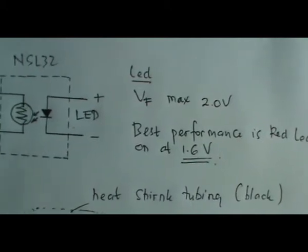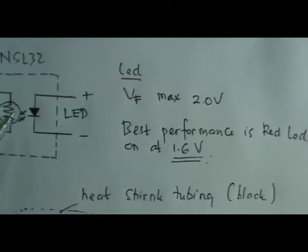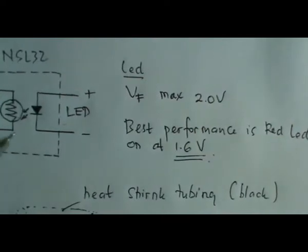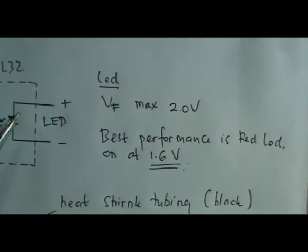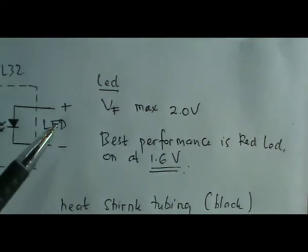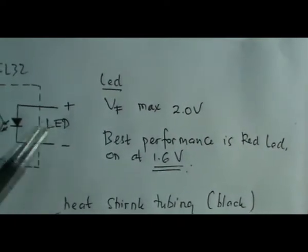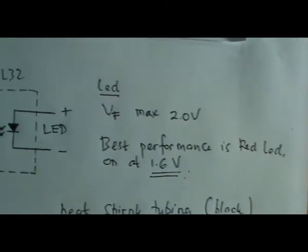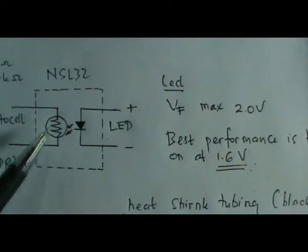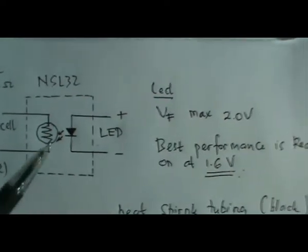So this photocell resistance plays up and down. For resistance, it depends on this LED brightness or LED signal. Any signal to LED will affect the resistance of this photocell.